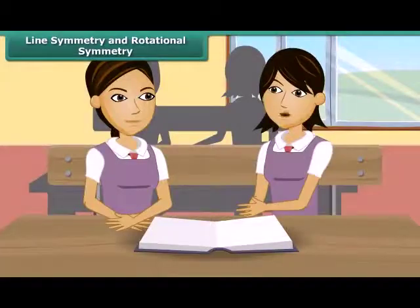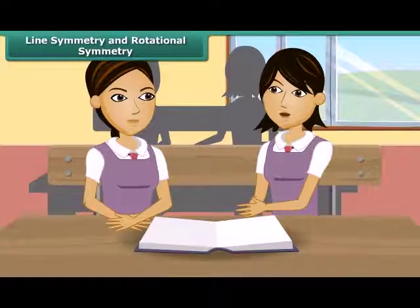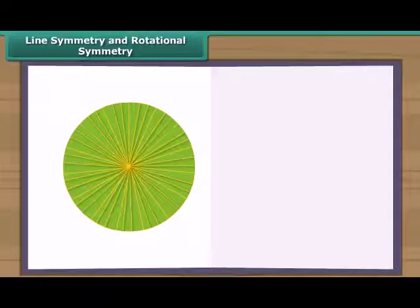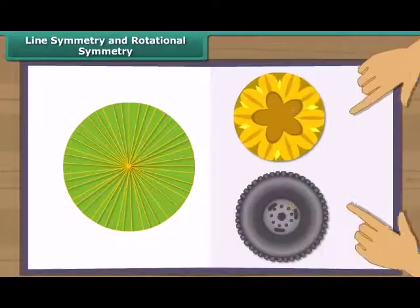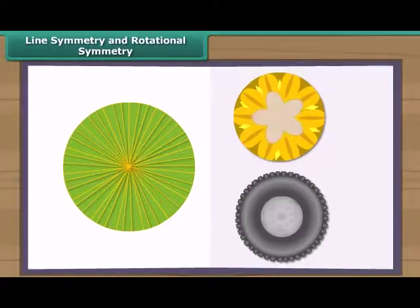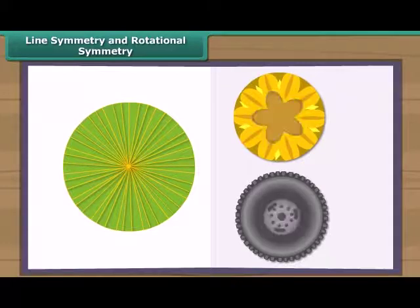Do you know which is the most perfect symmetrical figure? Is it the circle? Yes, the circle is the most perfect symmetrical figure. It can be rotated around its center through any angle, and at the same time it has an unlimited number of lines of symmetry. Every line through the center forms a line of symmetry, and it has rotational symmetry around the center for every angle.